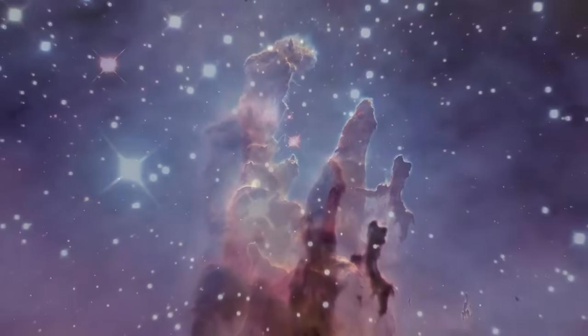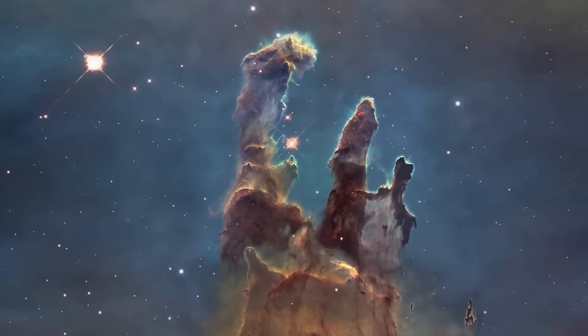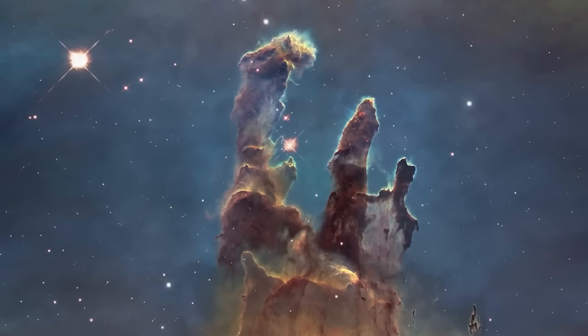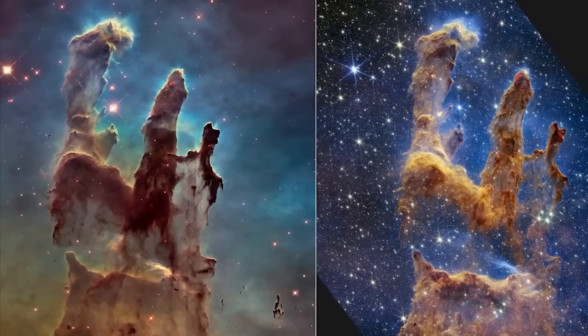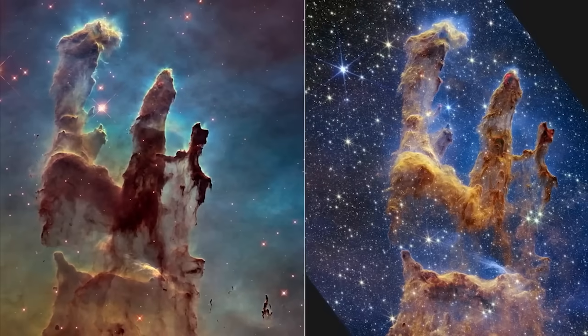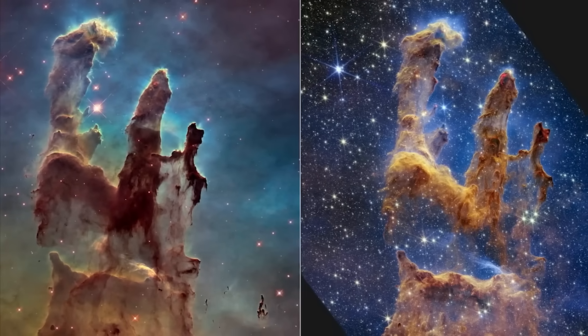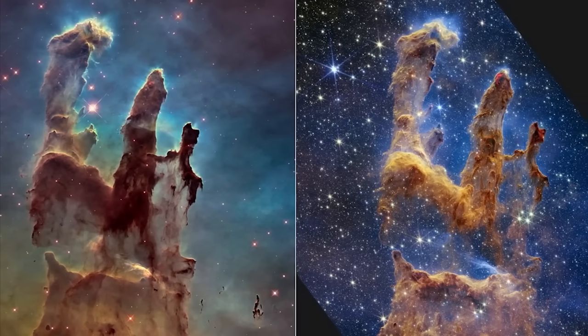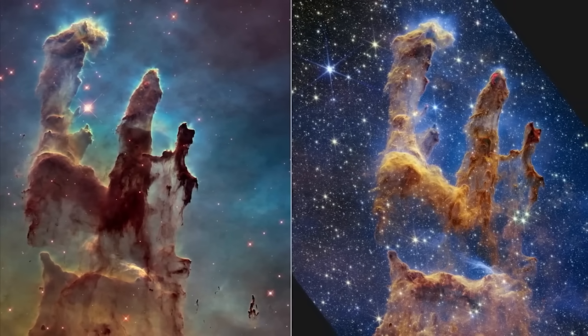James Webb's infrared vision has once again allowed us to see through the clouds of gas and dust, to reveal an area very dense with stars and veils of gas and dust. In fact, on the James Webb image, we see many more stars than on the Hubble image.